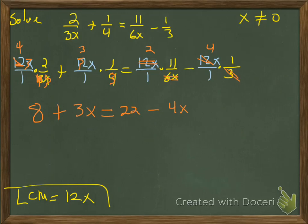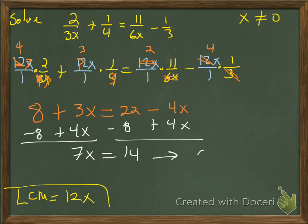There's one kind of yucky step where we had to deal with a lot of fractions. Now, something pops out that's pretty nice. We're going to get all the x's on one side, so add 4x to both sides. And subtract 8 from both sides. So we have 7x equals 14. Divide both sides by 7, x equals 2. I checked that with my restriction - it's not 0, so we're good to go.